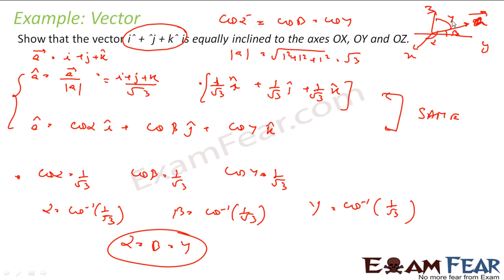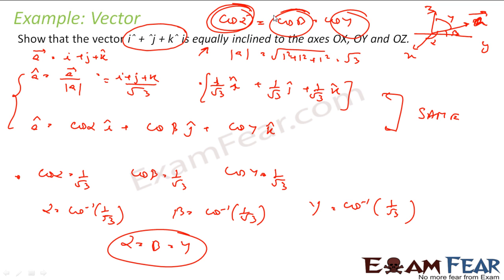We did exactly what we have done in the past example, but in this case the tricky part was we were told that we have to find that they are equally inclined. So we applied our brain a little bit and found that we are looking for cos alpha, cos beta, and cos gamma. Here it was not told explicitly to find direction cosines; we used our brain to determine that the question asked us to find cosines.